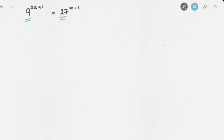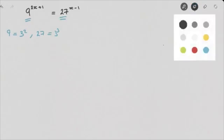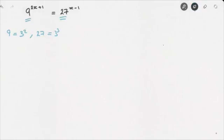Looking at the numbers 9 and 27, the number that comes to mind is 3. And indeed, we can see that 9 is equal to 3 to the power of 2, and 27 is equal to 3 to the power of 3. So using these two results, we can rewrite our equation as 3 to the power of 2 raised to the power of 2x plus 1, equals 3 to the power of 3 raised to the power of x minus 1.